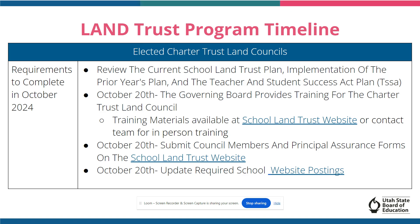Elected trust land councils will also need to review your school's current school land trust plan, the implementation of your prior year's plan, and the TSSP plan. In addition to those reviews, there are three major items due on October 20th. First, governing boards must provide training for charter trust land councils by October 20th. You may contact us for more training in person or use materials available at our website. Similar to governing boards acting as charter trust land councils, they also need to enter the council membership form and principal's assurance forms to the school land trust website by October 20th.